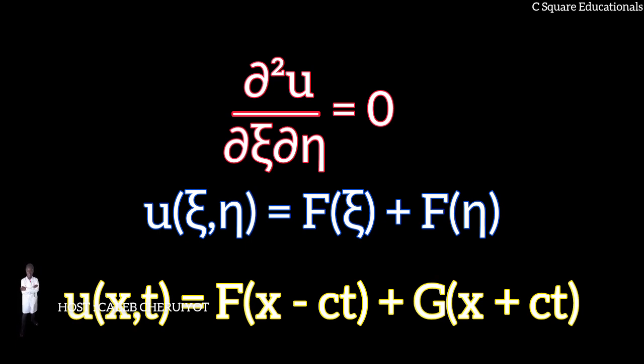u(x,t) = F(x - ct) + G(x + ct). In other words, the solutions of the one-dimensional wave equation are sums of a right-traveling function F and a left-traveling function G.